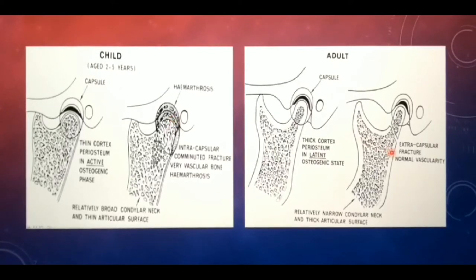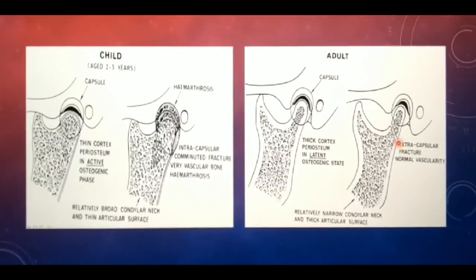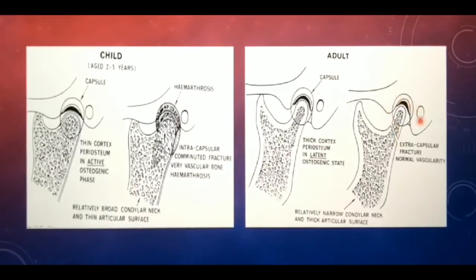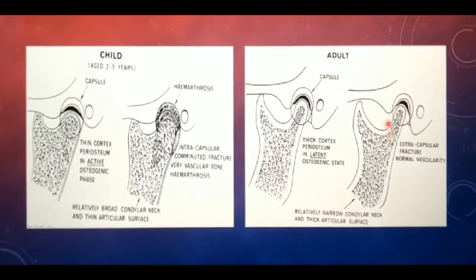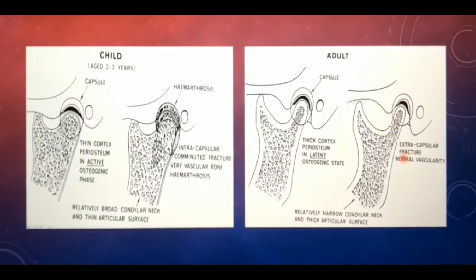Intracapsular fractures in children carry a higher risk of progressing into TMJ ankylosis. In contrast, in an adult the condylar neck is relatively narrow and the articular surface is thicker. Hence, an impact to the condyle in an adult will result in an extracapsular fracture with normal vascularity.